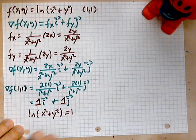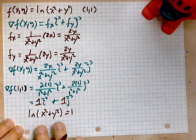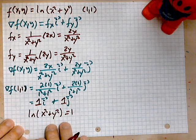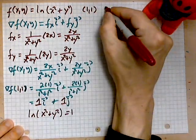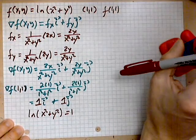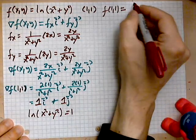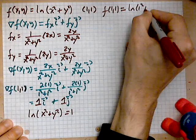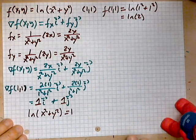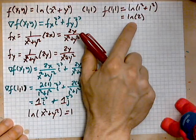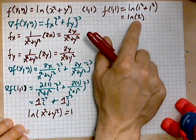All right. So the way to do it is as follows. Find the value of the function at the point (1,1). So f(1,1) is the following: ln(1² + 1²) = ln(2). Now I can take the function, set it equal to that, and it's going to give me a nice level curve.